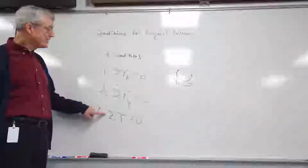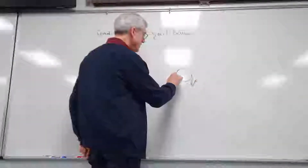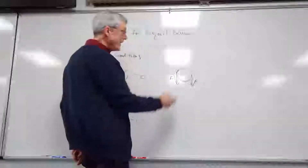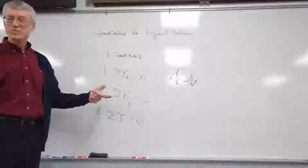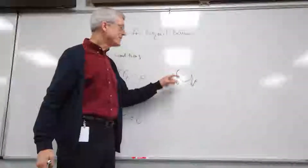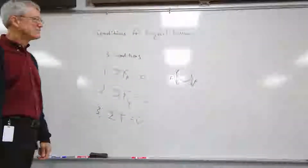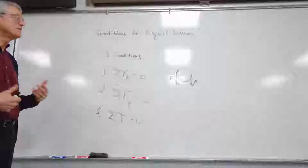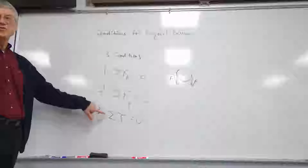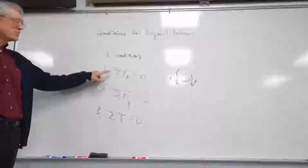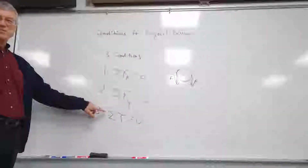If all three conditions are true — going back to the wheel with both forces — all three conditions are true: the wheel is not moving left or right, not moving up or down, and not rotating. It is in equilibrium. The rest of this period we'll talk about this third condition and look at examples of how we can use the sum of the torques equals zero to solve problems.